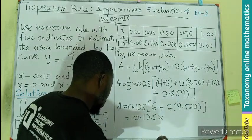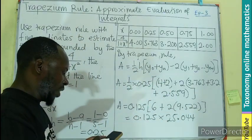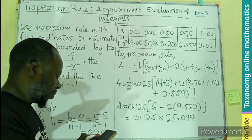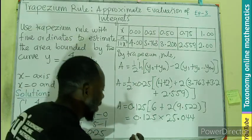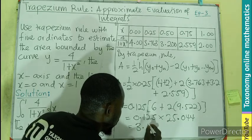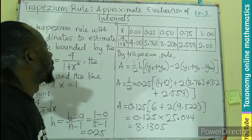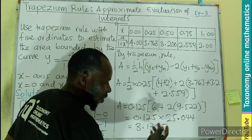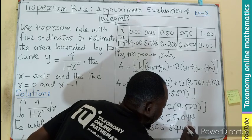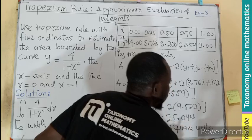25.044, which gives us 3.1305. We haven't been told how many decimal places to use, so we can leave it as 3.1305 square units.